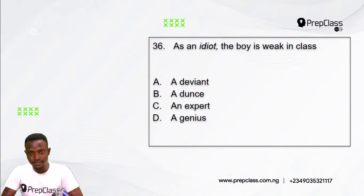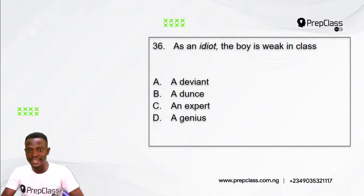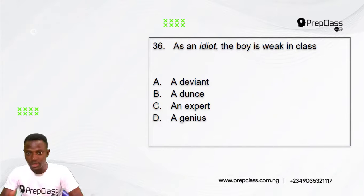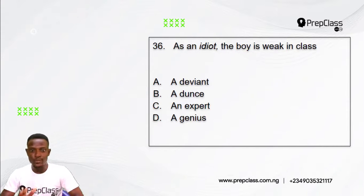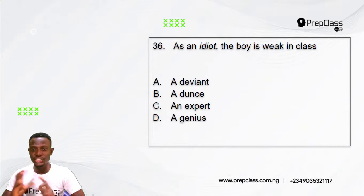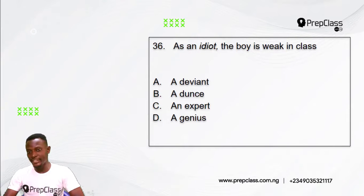Question 36: As an idiot, the boy is weak in class. The word in italics here is 'idiot.' Options: A) A deviant, B) A dunce, C) An expat, D) A genius. Which of these options is the opposite meaning to 'idiot'?